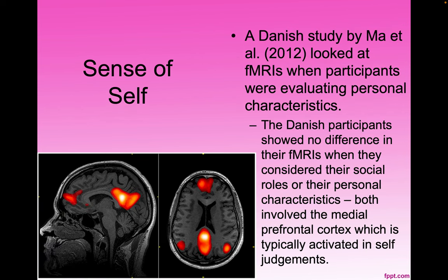A Danish study by Ma et al. in 2012 looked at functional MRIs when participants were evaluating personal characteristics. Danish participants showed no difference in their functional MRIs when they considered their social roles or their personal characteristics — both involved the medial prefrontal cortex, which is typically activated in self-judgment.